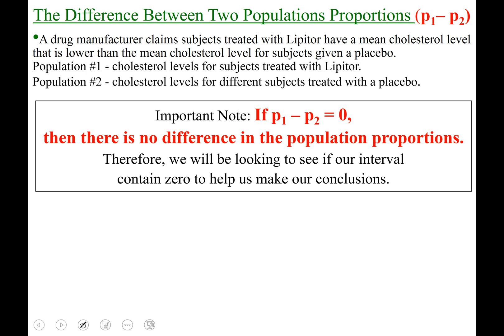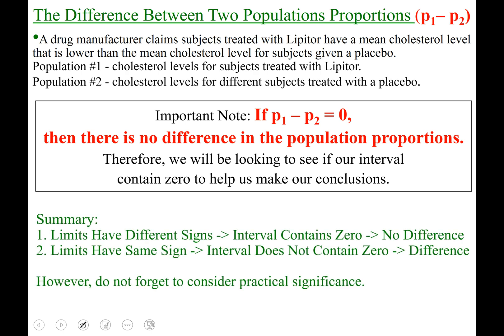We're going to set up confidence intervals and check if those confidence intervals contain 0, and that's going to help us make our conclusions. A confidence interval would contain 0 if the limits have different signs — if one limit is negative and one is positive, the interval contains 0, leading us to say there is no difference in the two population proportions. If the limits have the same sign — both negative or both positive — then 0 is not between the two, so the interval does not contain 0, and we say yes, there is a difference.